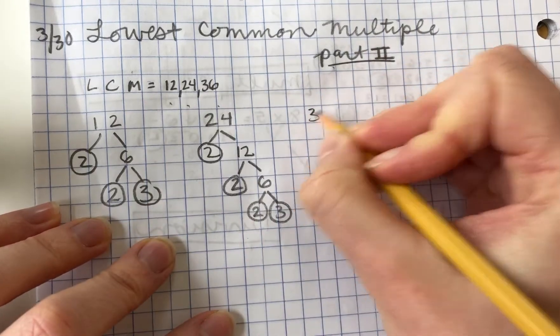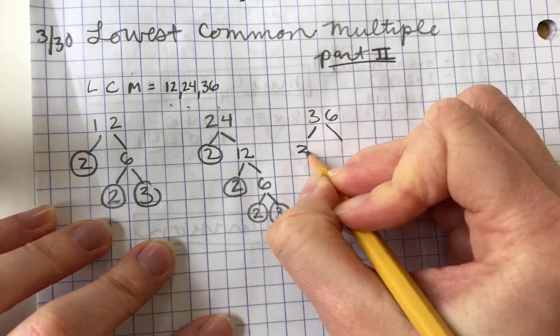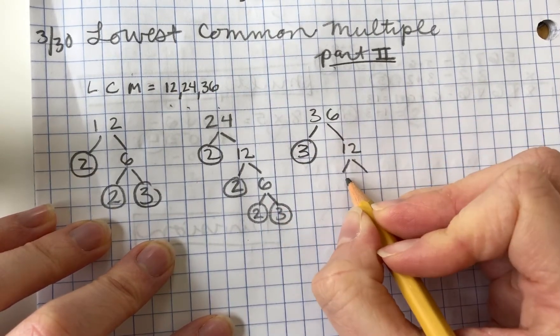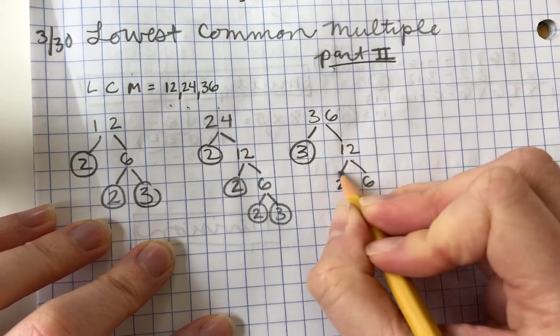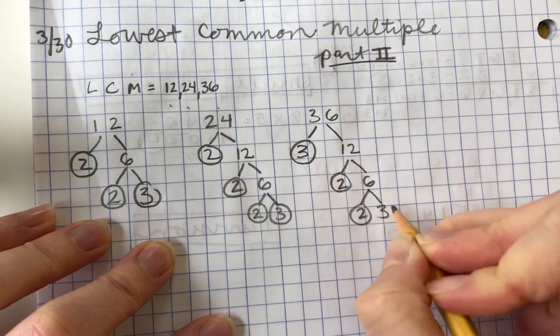And then 36 breaks down 3 times 12. 3 is a prime number. 12 breaks down into 2 and 6. 6 breaks down into 2 and 3.